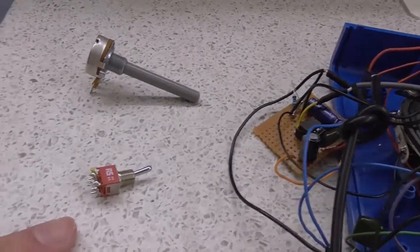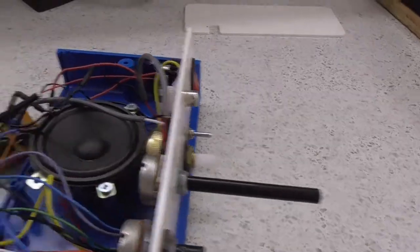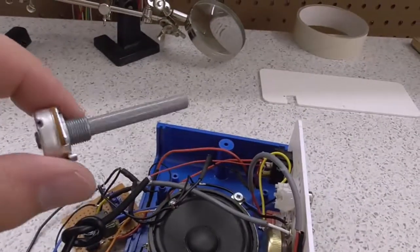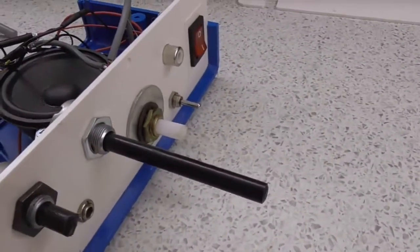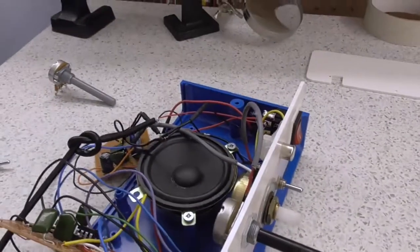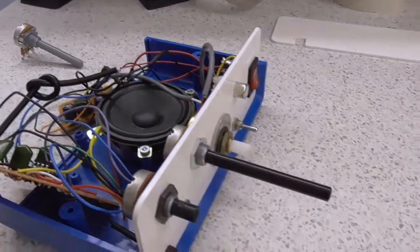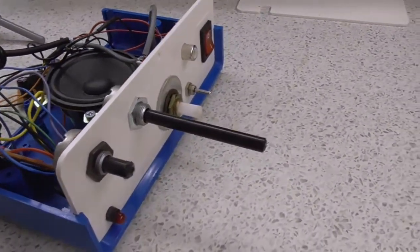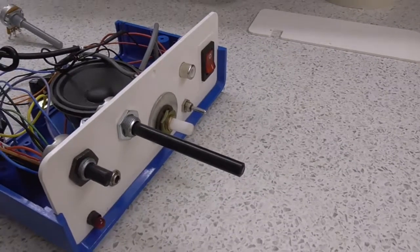And this pot here was a linear pot. So, it was this one here, I think. And that's not right for volume control, so I switched it for a log pot. But it all seems to be working. It's running off a USB connection now. And I'm going to put the lid on and sort out the knobs and give it a bit more testing.